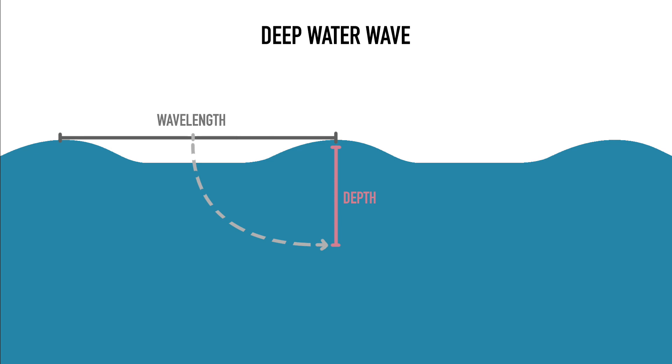Up to this point we've been describing deep water waves — that is to say waves traveling in water depths greater than half a wave's wavelength. At this depth the energy of the wave doesn't reach down enough to touch the ocean floor, and so the waves travel across the ocean with very little interference.